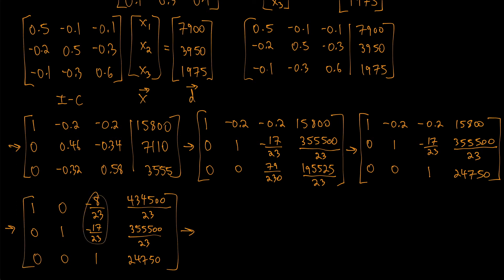Just need to get these two zeros, so I'll multiply by 17/23 for my second row and 8/23 for my first and add. I'll get 1, 0, 0, 27,500; 0, 1, 0, 33,750; and 0, 0, 1, 24,750.